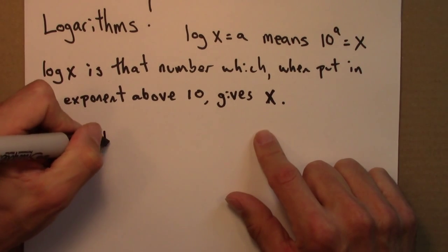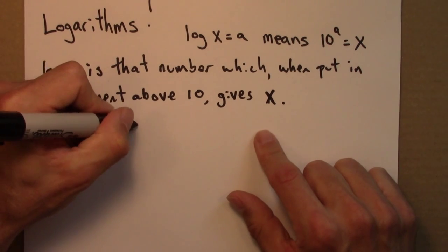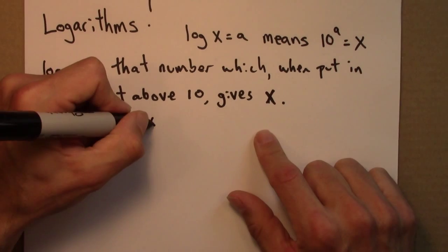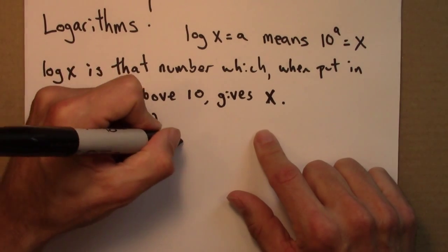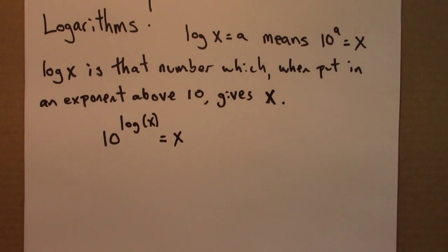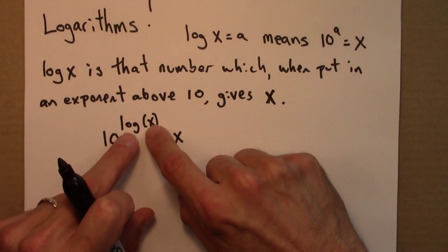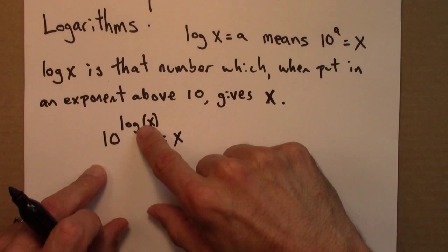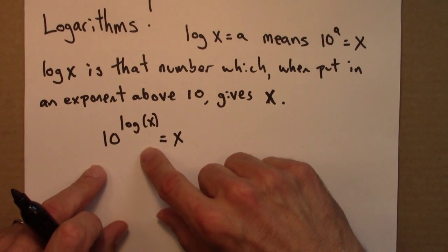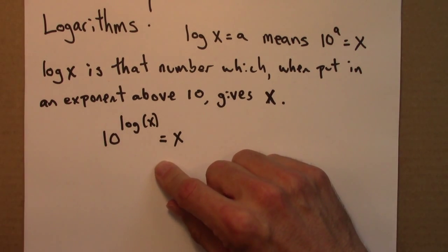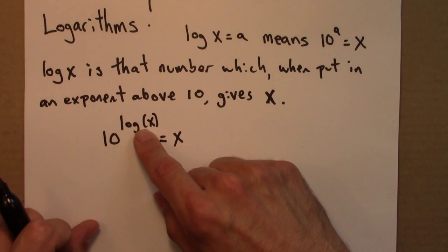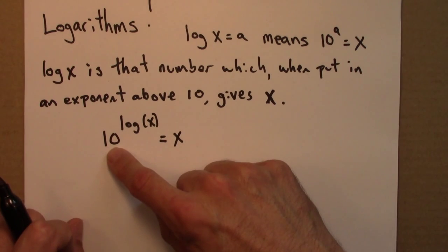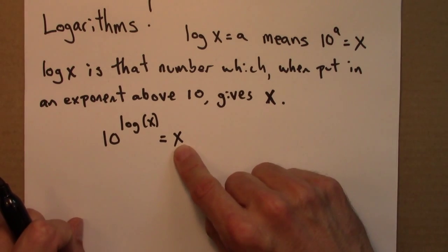In other words, 10 to the log x is x. So this tells us that logarithming, taking a log and then exponentiating, they undo each other. So these are actually inverses of each other. One does something, the other undoes something. So logs undo exponentiation. If you log something and then exponentiate it, you are right back to where you started from.